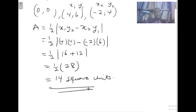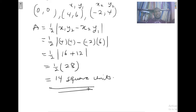16 plus 12 gives us one half times 28, which gives us 14 square units as our area. This is what we do when we are given all the vertices of a triangle and have to calculate the area without using the distance method to find the side lengths. Then let's go on quickly to method two.